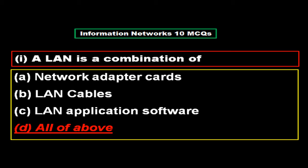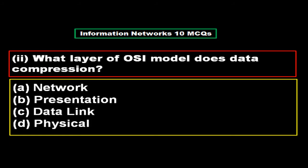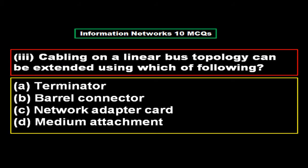What layer of the OSI model does data compression? Option A network, option B presentation, option C data link, option D physical. The right answer is option B, presentation.